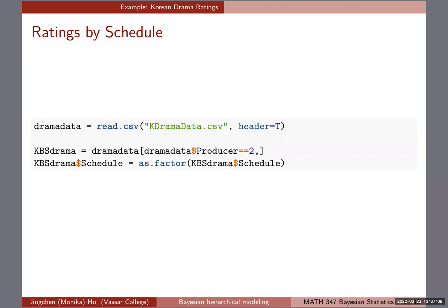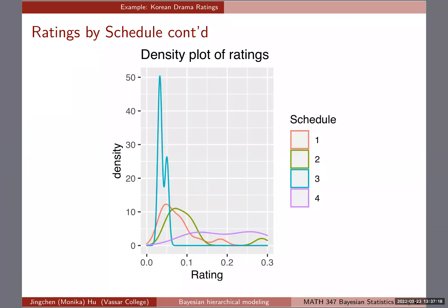To explore the data, we load it and filter for producer equals two, which refers to KBS dramas, making sure to treat the schedule variable as a categorical variable. Looking at a density plot of ratings by schedule across all four schedules, you can see some interesting patterns that hopefully stand out.